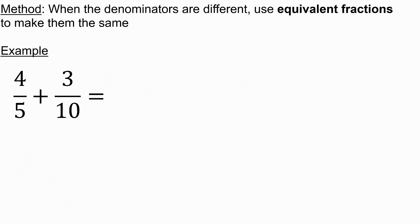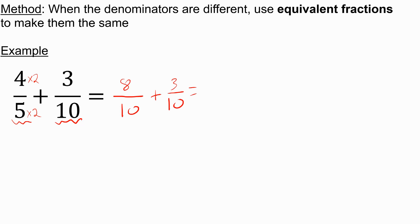Similarly, here I have four fifths plus three over ten. This will be a little bit trickier to draw out. The lowest common multiple of five and ten is just ten. So to get ten, I multiply the five by two, and therefore I need to multiply the numerator by two as well to keep the fraction the same. So I have eight over ten plus three over ten, giving me an answer of eleven over ten. Ten goes into eleven once with remainder one, so the final answer is one and one tenth as a mixed number.